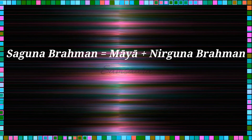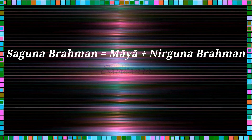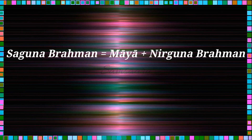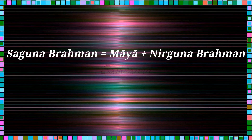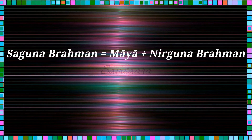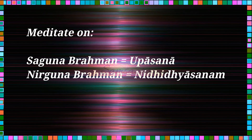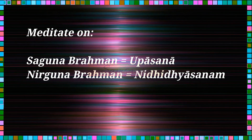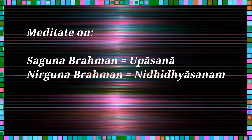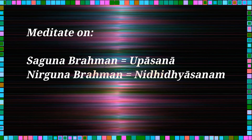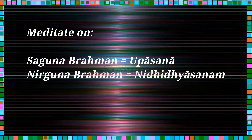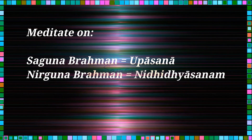Nirguna Brahman is the god without attributes. When you remove Maya, what stands there is just the Nirguna Brahman. There are two aspects: the Saguna Brahman and the Nirguna Brahman. When you meditate on the Saguna Brahman, this is known as Upasana, which we saw in Chapter 6. When you focus on the Nirguna Brahman, this is known as Nididhyasana. There is a difference between Upasana and Nididhyasana.